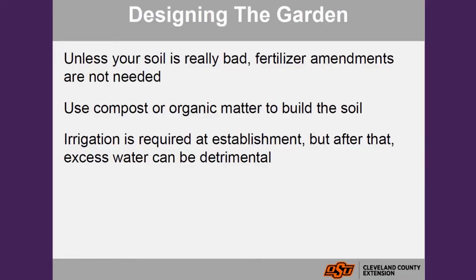Some plants will also reseed, so try to give them room to spread. You can plant one year and though it might be an annual that dies out at the end of the season, its seed will come back the following year and be perennially present within your garden. Unless your soil is really bad, fertilizer amendments are generally not necessary. You can always do a soil test, but native plants typically don't need the same amount of amendments as other plants — they're better adapted to existing soil conditions.